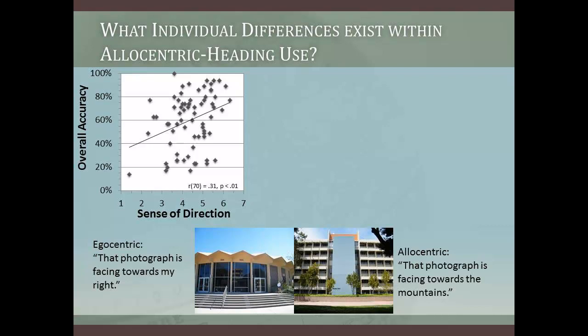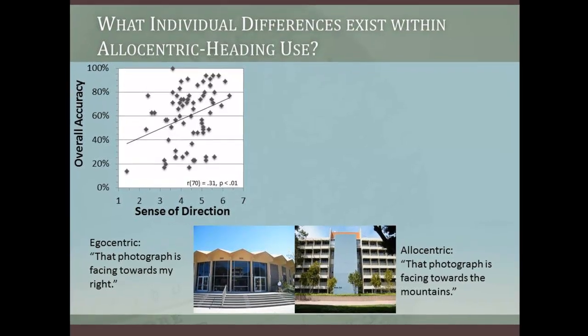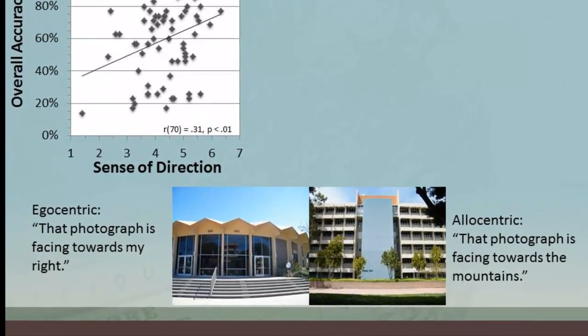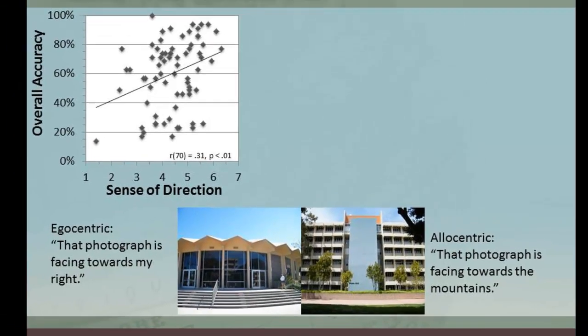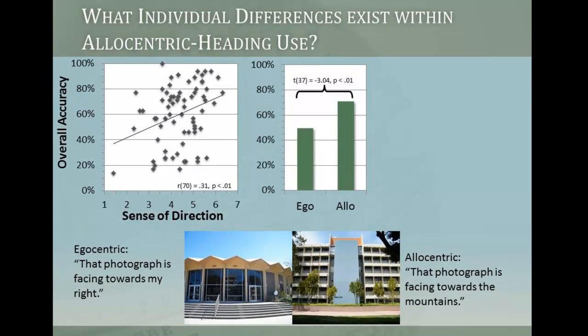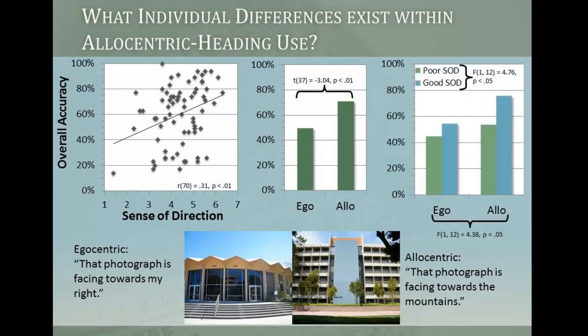When I showed photographs of the UCSB campus to individuals, I found that some individuals tended to relate these allocentric headings to their own bodies — say, that photograph is facing towards my right. Whereas others tended to relate these allocentric headings to the environment — say, that photograph was facing towards the mountains. People who use this allocentric strategy actually tended to do better, and interestingly, using the allocentric strategy improves performance regardless of your sense of direction.